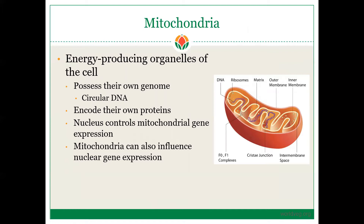Here's a brief overview — back to intro genetics. The mitochondria is the energy-producing organelle in the cell, and it possesses its own genome. Unlike the chromosomes in the nucleus, the mitochondrial genome is circular — those purple looping strands in the image are the mitochondrial genome. Mitochondria encode their own proteins. However, nuclear genes can influence mitochondrial gene expression, and mitochondrial genes can also influence nuclear gene expression.